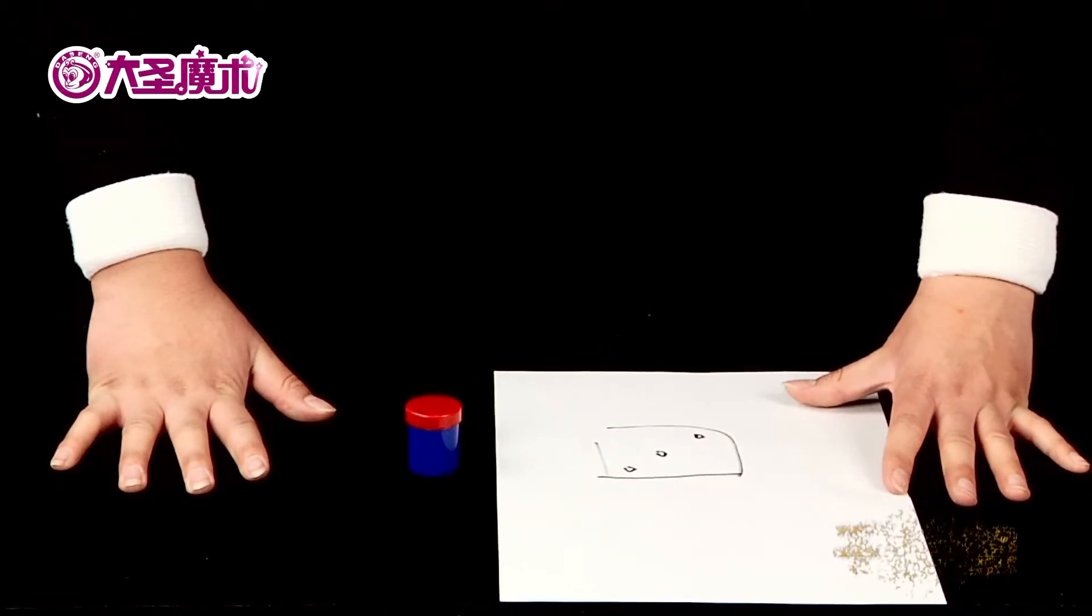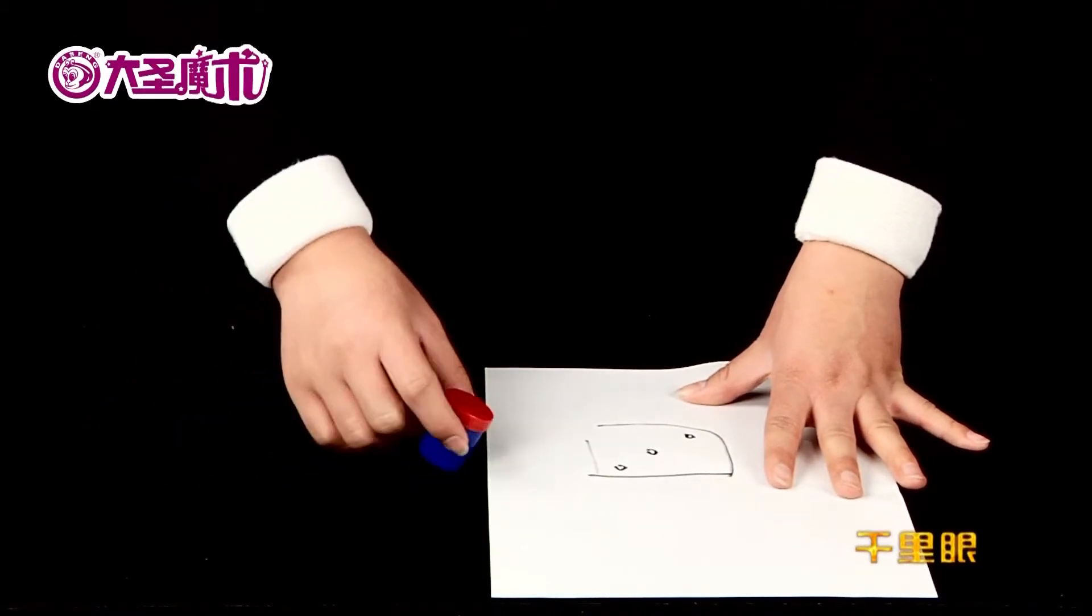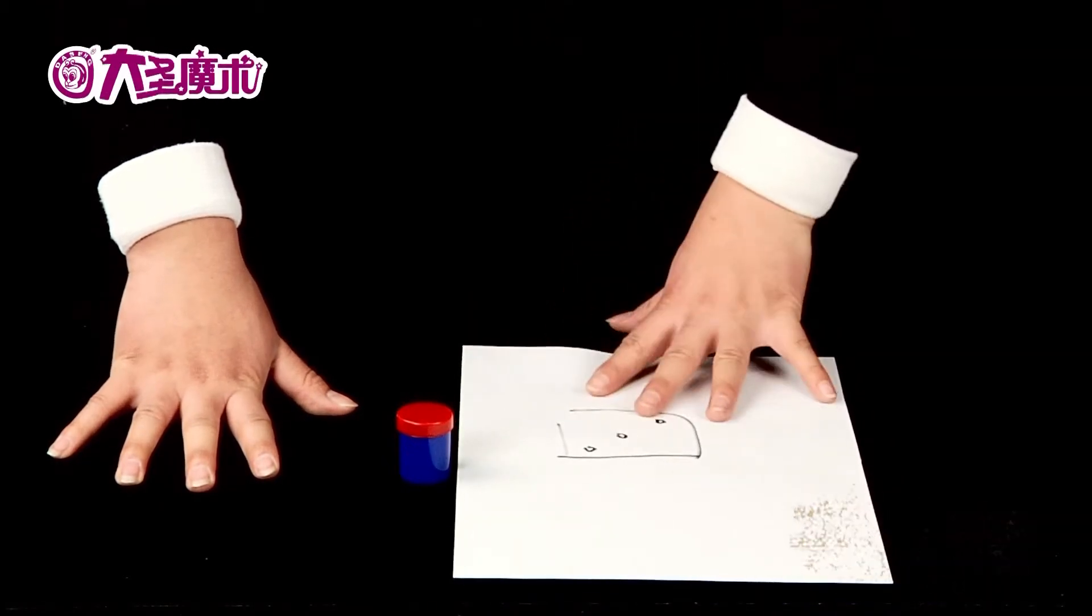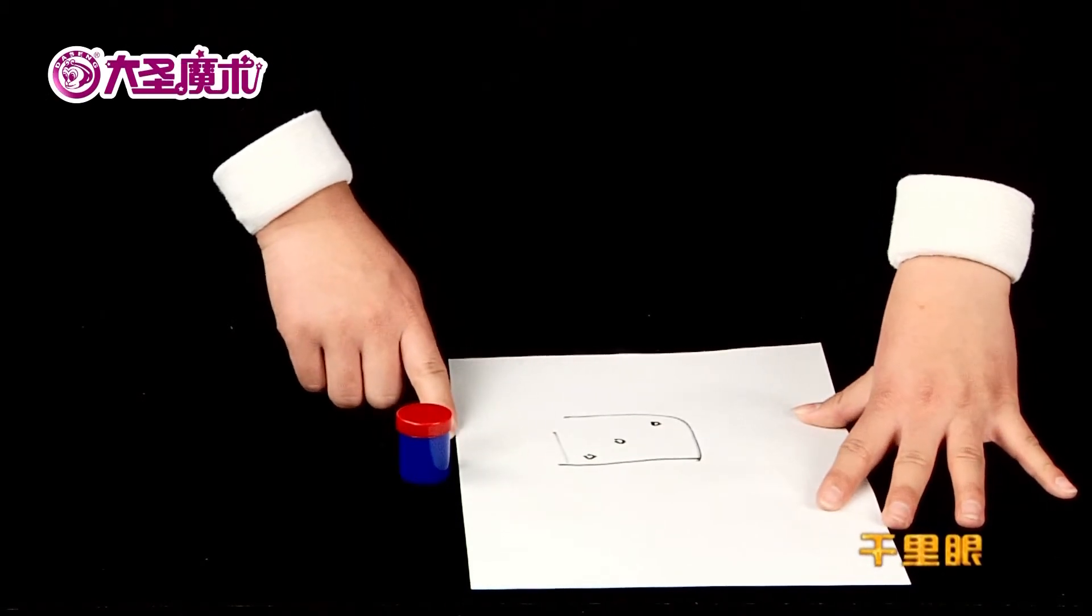Then find a blank sheet of paper, draw the dice yourself, and write down the points.